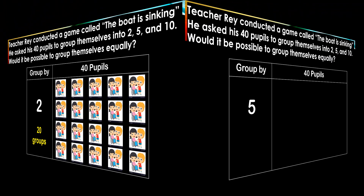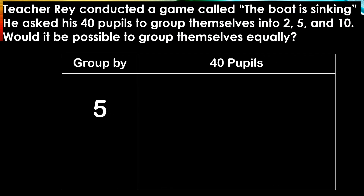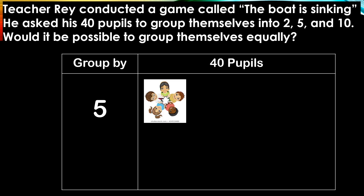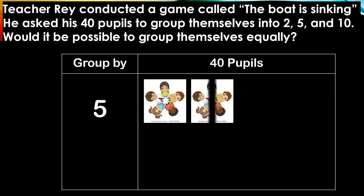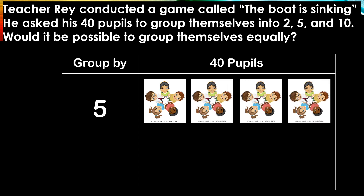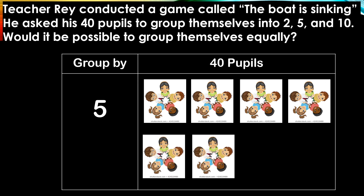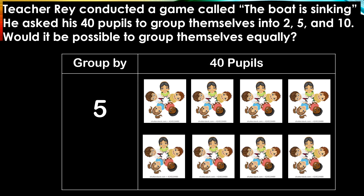Let us proceed to the next number. What about if we are going to group them by 5? Would it be possible? Let us try. Counting by 5's: 5, 10, 15, 20, 25, 30, 35, 40. As you can see, we have 8 groups of 5. Meaning, 40 is divisible by 5.